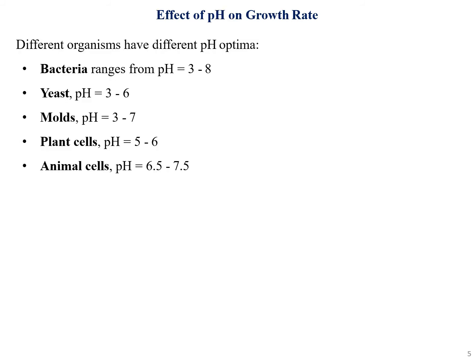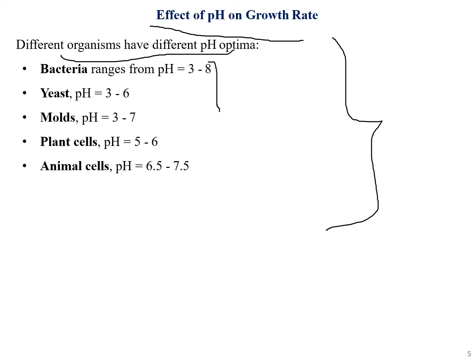Next we have the effect of pH on growth rate. Different organisms have different pH optima. Bacteria survive from pH 3 to 8, yeast from 3 to 6, mold from 3 to 7, plant cells from 5 to 6, and animal cells from 6.5 to 7.5. Overall, the optimal pH range appears to be roughly 4 to 7.